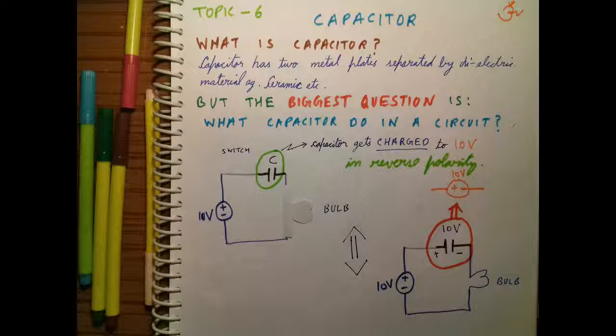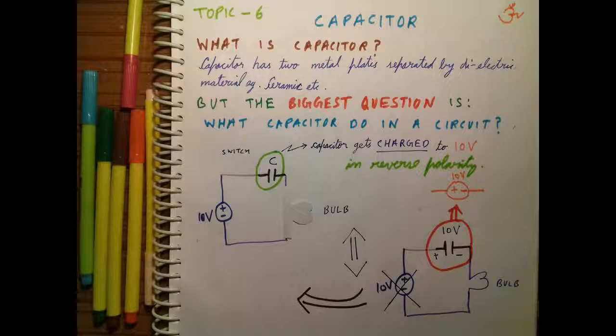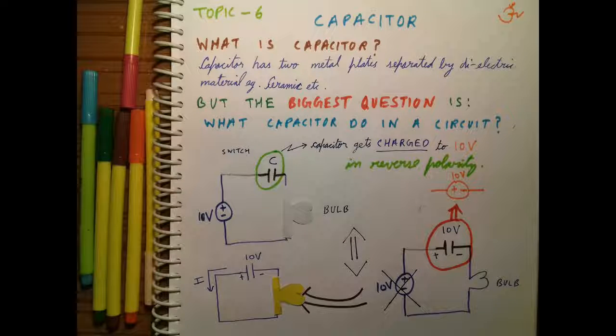Now let's see what happens if we remove the actual DC source, the actual 10-volt DC source from the circuit. As soon as we remove the 10-volt DC source and replace it with a short circuit, the current flows in the circuit and the bulb blows. The current direction is shown on the screen.